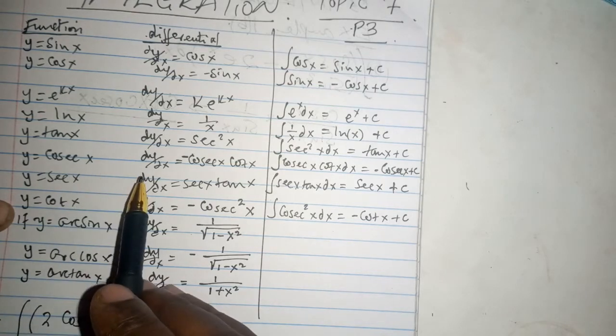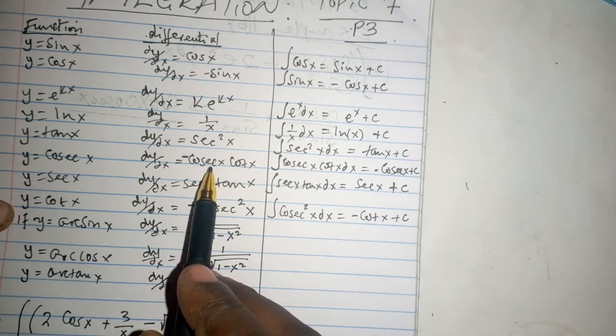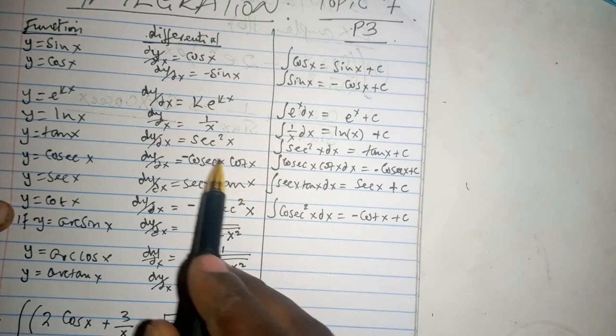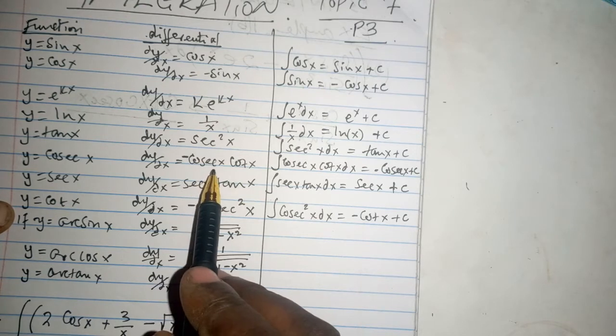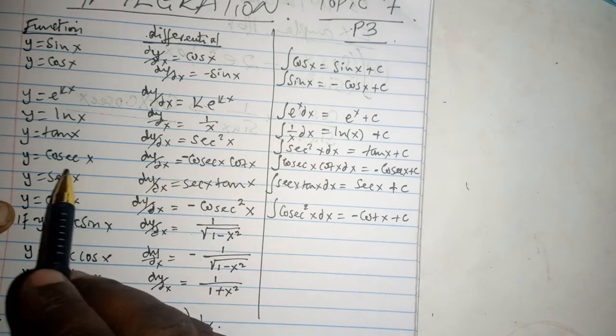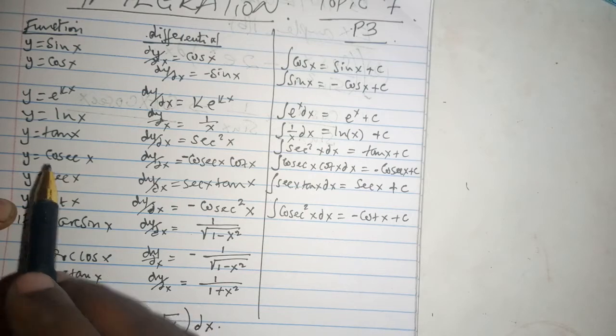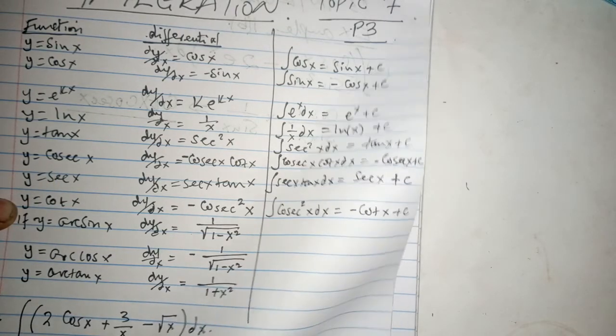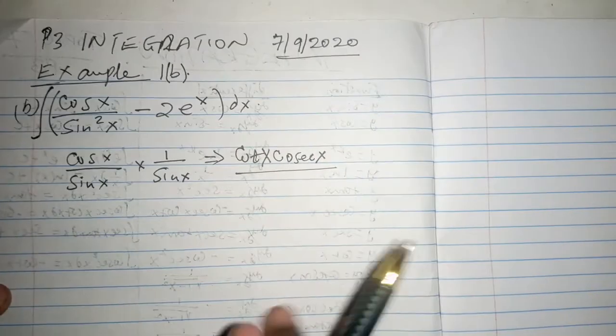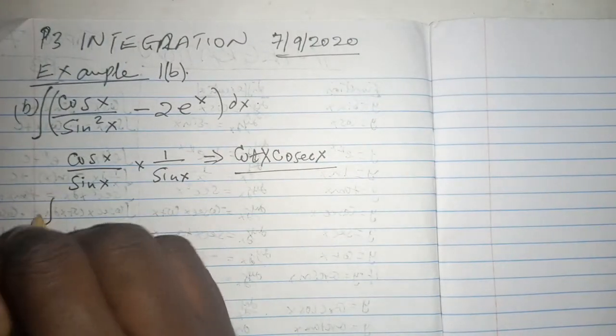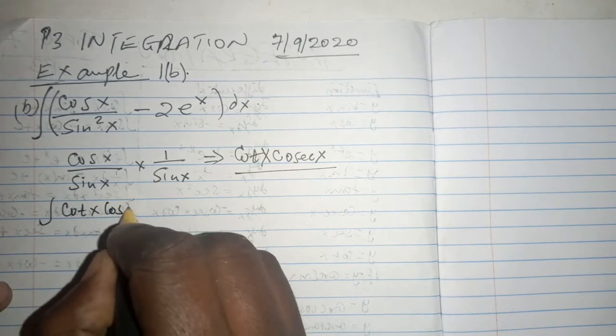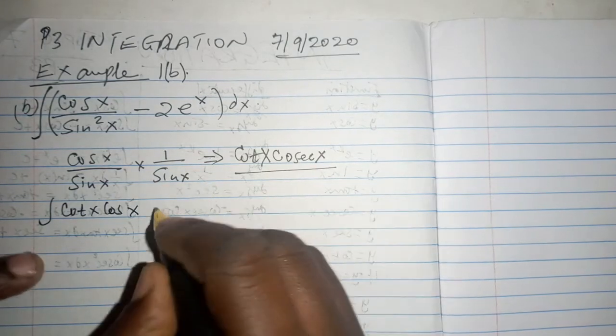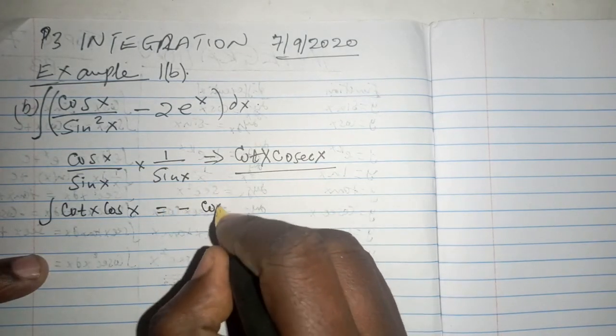We know very well that if y is the cosec of x, then dy/dx is negative cosec x cot x. That means if we happen to integrate the cosec x cot x we are going to have negative cosec x, and that is exactly what we need to do now.